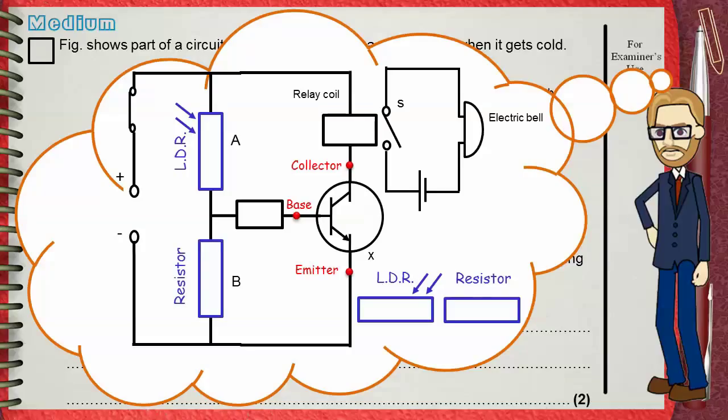This means that if you want a dark sensor or dark alarm, you will put the LDR in B and the resistor in A.